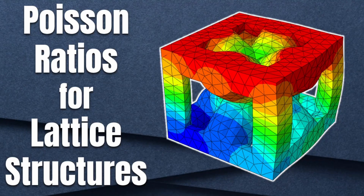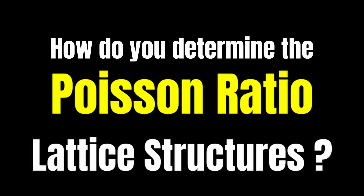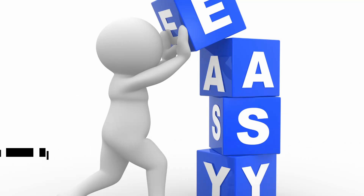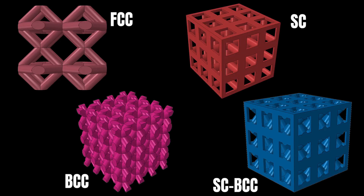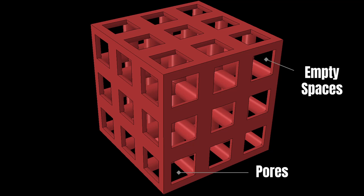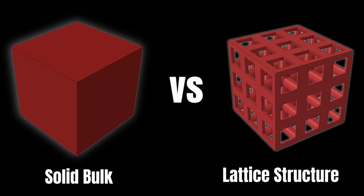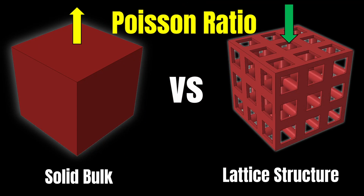I got asked recently about how do you determine the Poisson ratio for lattice structures, and this got me thinking — this is why I'm making this video, to point you to an easy, quick numerical way to determine the Poisson ratio for lattice structures. Lattice structures are full of spaces within them, and the presence of those spaces will cause deformation to be different compared with a solid bulk, so we expect the Poisson ratio for such lattice structures may be slightly different.